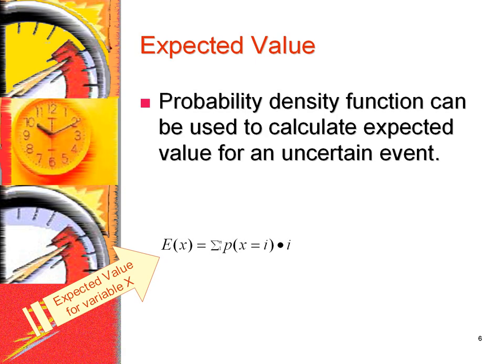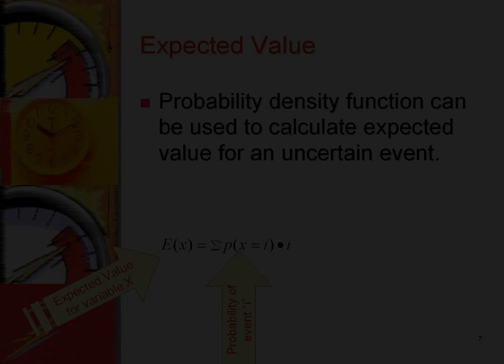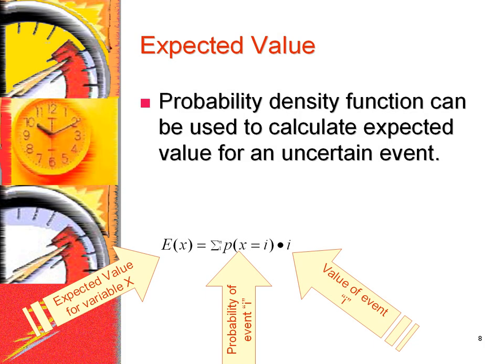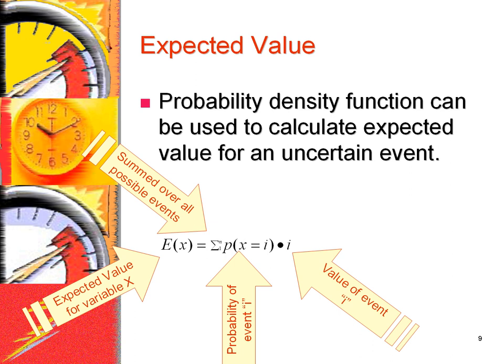A probability density function can be used to calculate the expected value for an uncertain event. The expected value is calculated by multiplying the probability of the event by its value and summing across all possible values.